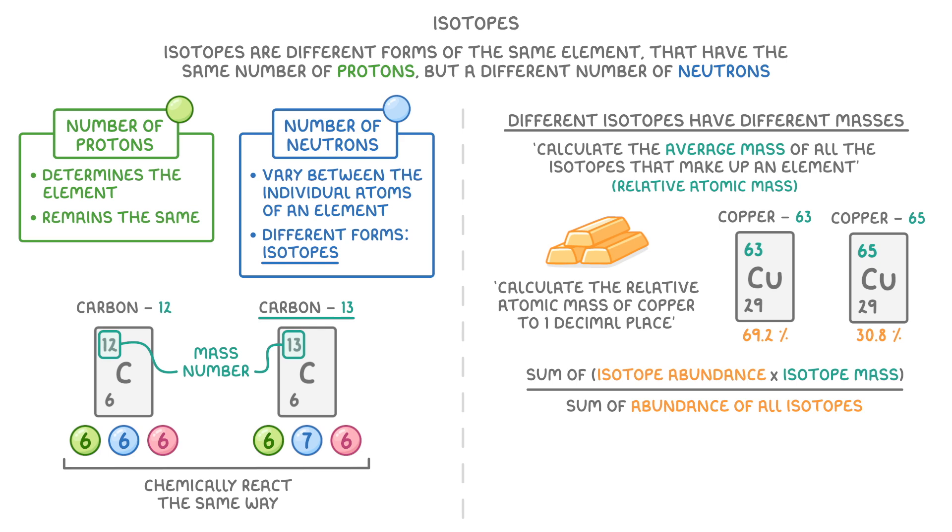So the first thing we do is multiply each isotope's abundance by its mass. So for the copper-63 isotope, this would be 69.2, which is its abundance, times 63, which is its mass. And for copper-65, it would be 30.8 times 65. Then we sum these two figures together, which just means we add them together. Lastly, we divide this by the sum of the abundances of all the isotopes, which in this case would be 69.2 plus 30.8.